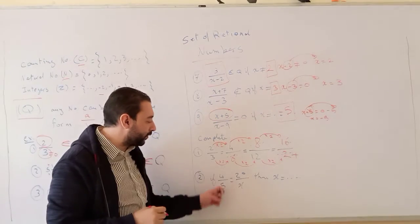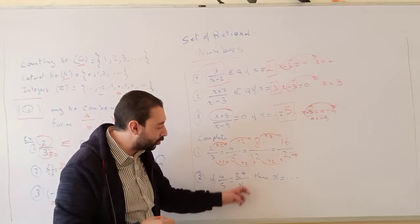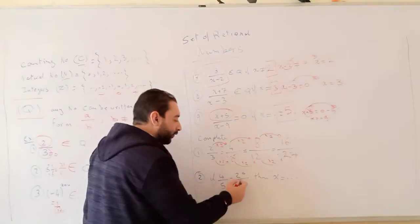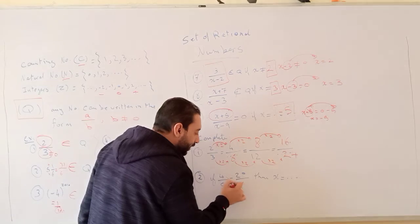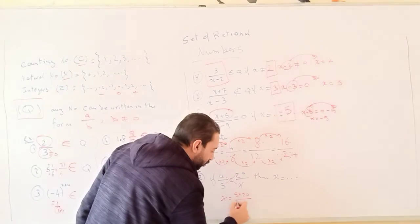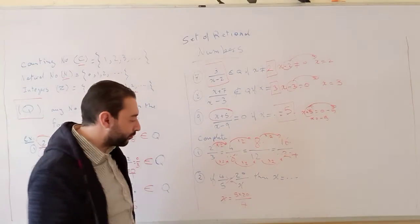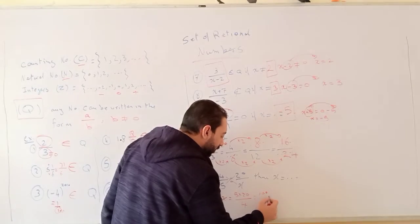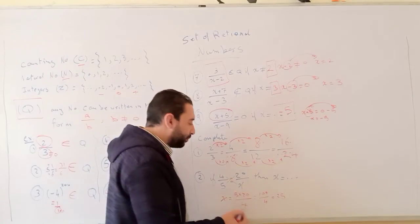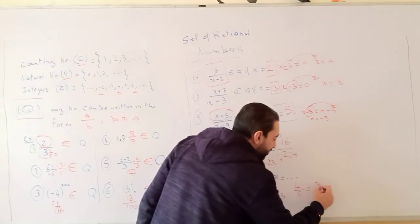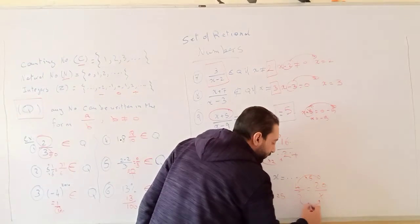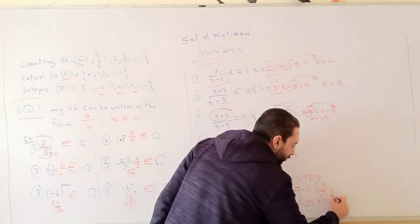If 4 over 5 equals 20 over x, find x. We have two ways to solve this. The first way is cross-multiplication: 4 times x equals 5 times 20, so x equals 5 times 20 over 4, which equals 100 over 4, which equals 25. Or more simply: 4 becomes 20 by multiplying by 5, so 5 times 5 equals 25, meaning x equals 25.